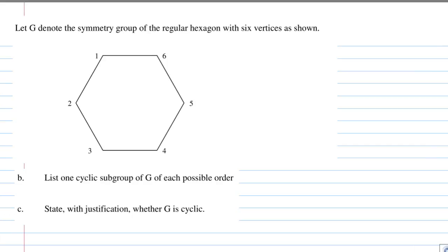Hi, for this recording, I'm going to investigate whether the symmetry group of a regular hexagon is cyclic or not. The way to do this is I'm going to list out every cyclic subgroup of this symmetry group of each possible order.